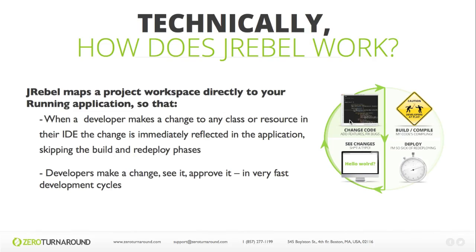We want to stay on the left-hand side where we make changes to our code and then test our code — these are the productive segments. We don't want to be in the deploy, compile, build, or redeploy segments. What JRebel does is entirely eliminate everything on the right-hand side, so we can stay in the left-hand segments of developing and testing code, entirely eliminating our wasted time.